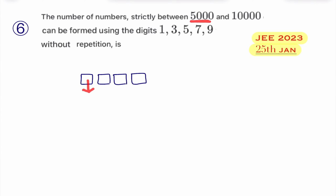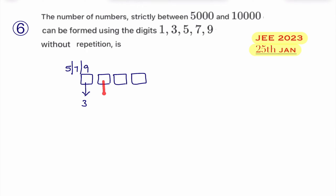Since the number must be between 5000 and 10,000, the first box can be filled with 5, 7, or 9. If we write 3 in the first place, the number is not between 5000 and 10,000. So the first box can be filled in three ways: with 5, with 7, or with 9.